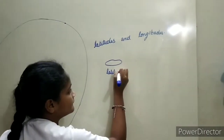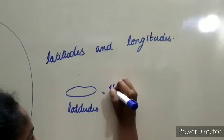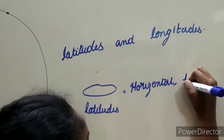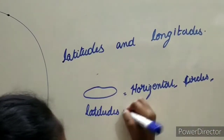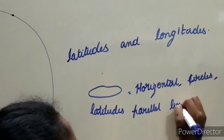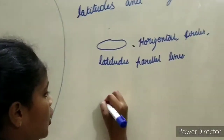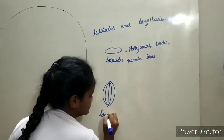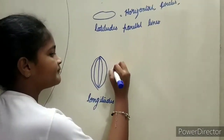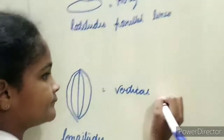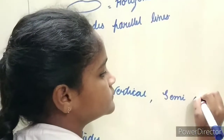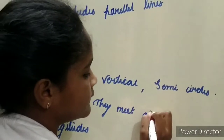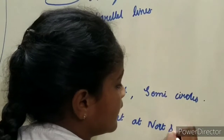Latitudes are horizontal circles and parallel lines. They do not meet at any point. Longitudes are vertical semicircles and they meet at the North and South poles.